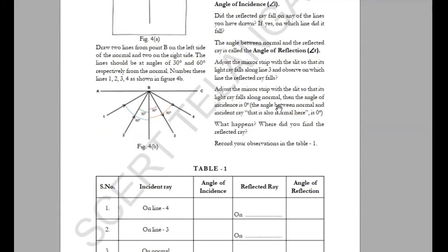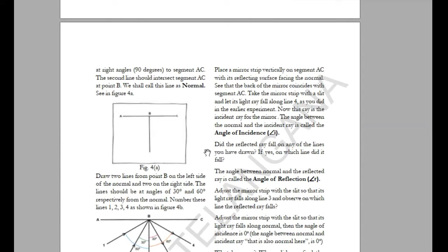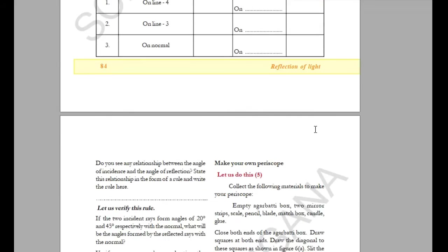There are two types of rays: incident ray and reflected ray. With the help of a plane mirror, we see the incident ray and the reflected ray. The angle of incidence is the angle between the normal and the incident ray, denoted as angle i. The angle of reflection is the angle between the normal and the reflected ray. These will be explained on the board.